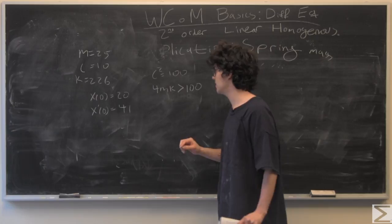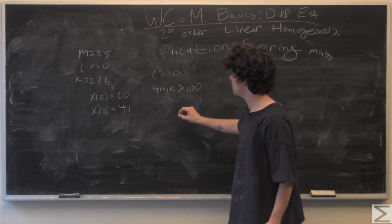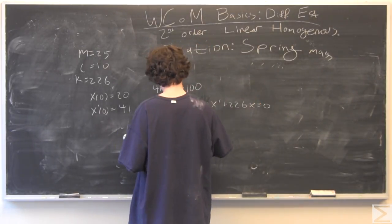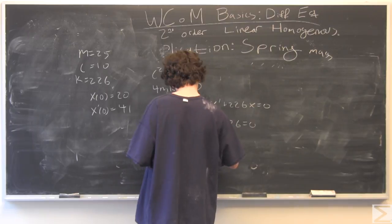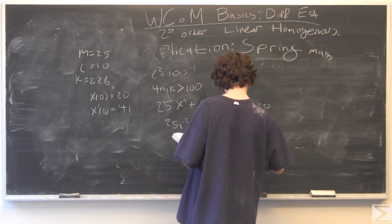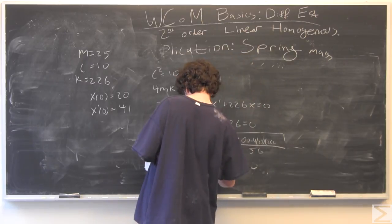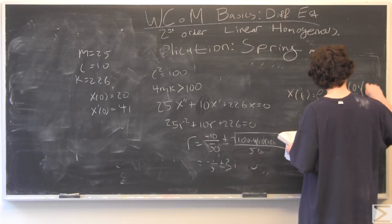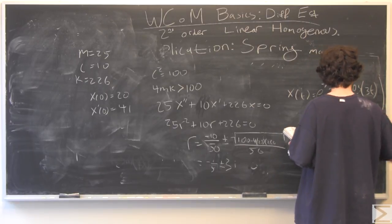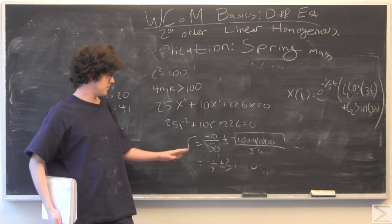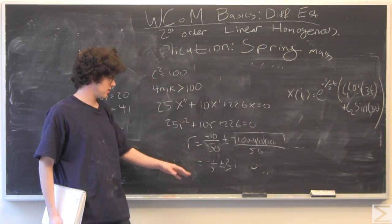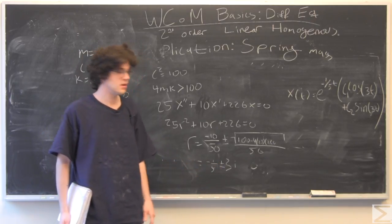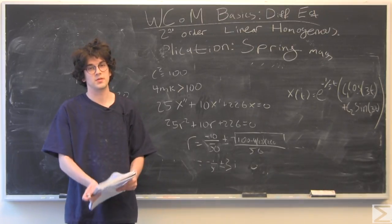We're just going to go ahead and find our roots from our characteristic equation. I've used the binomial formula to find our roots, which is negative one-fifth plus or minus 3 times i. And I've just plugged that into the formula we derived in the last video.